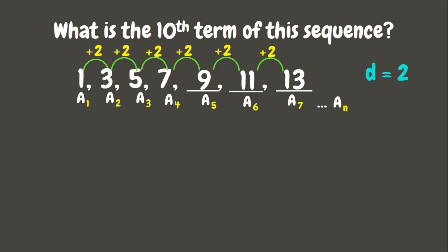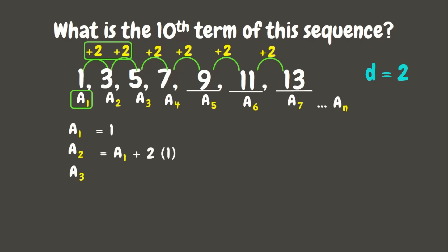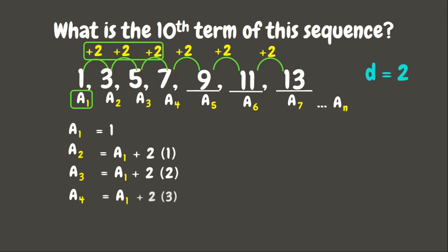Let's observe the pattern in this sequence. For the first term we have 1. For the second term, we added 2 once: a sub 1 + 2×1. For the third term, we added 2 twice: a sub 1 + 2×2. For the fourth term, we added 2 three times: a sub 1 + 2×3.